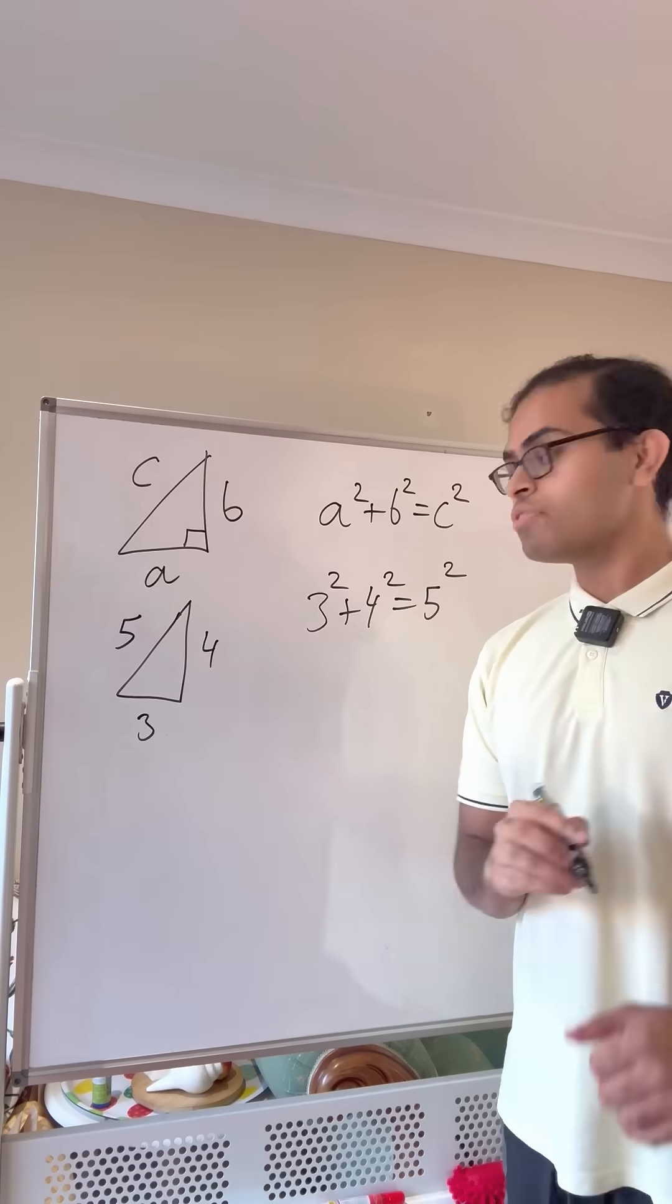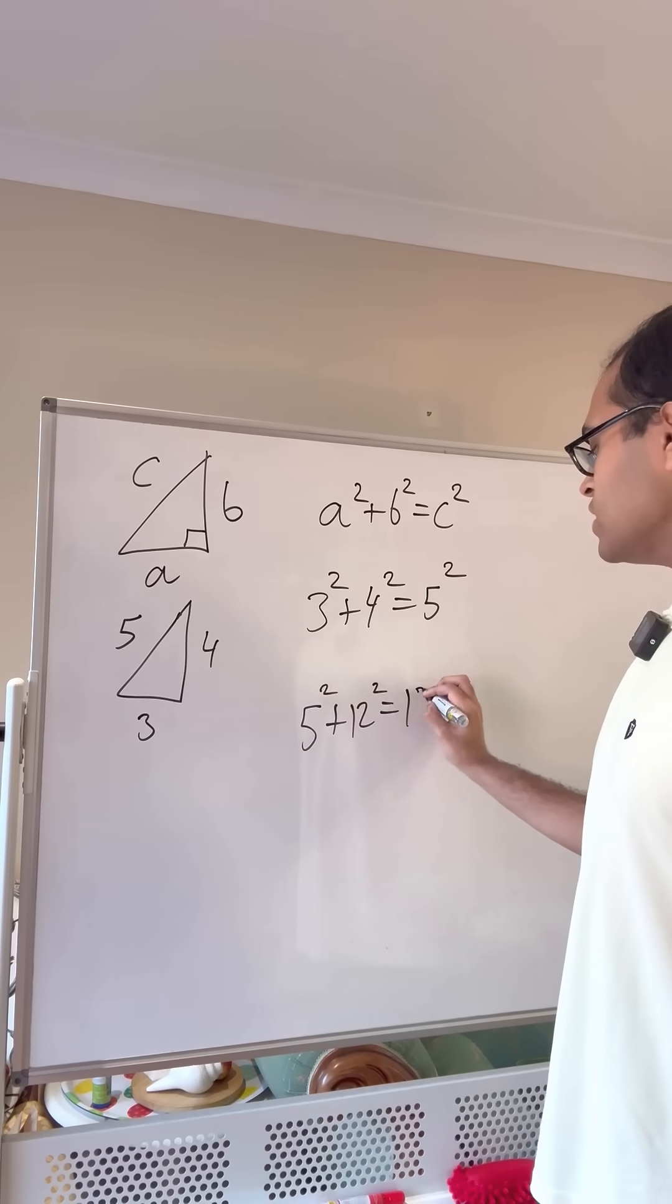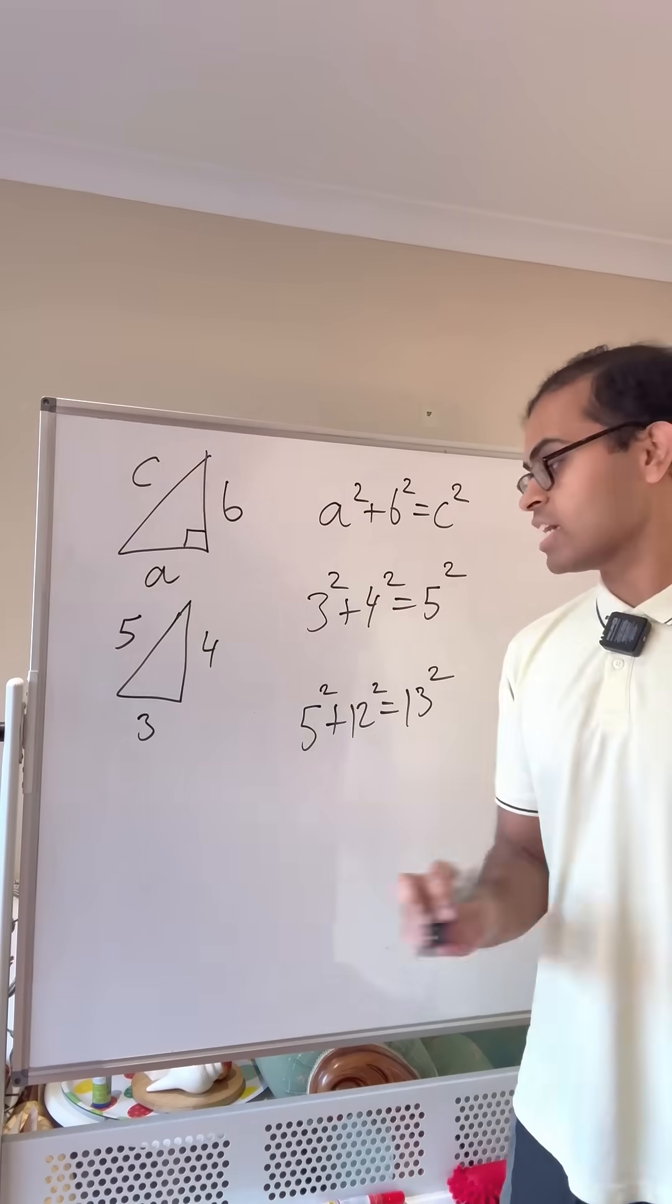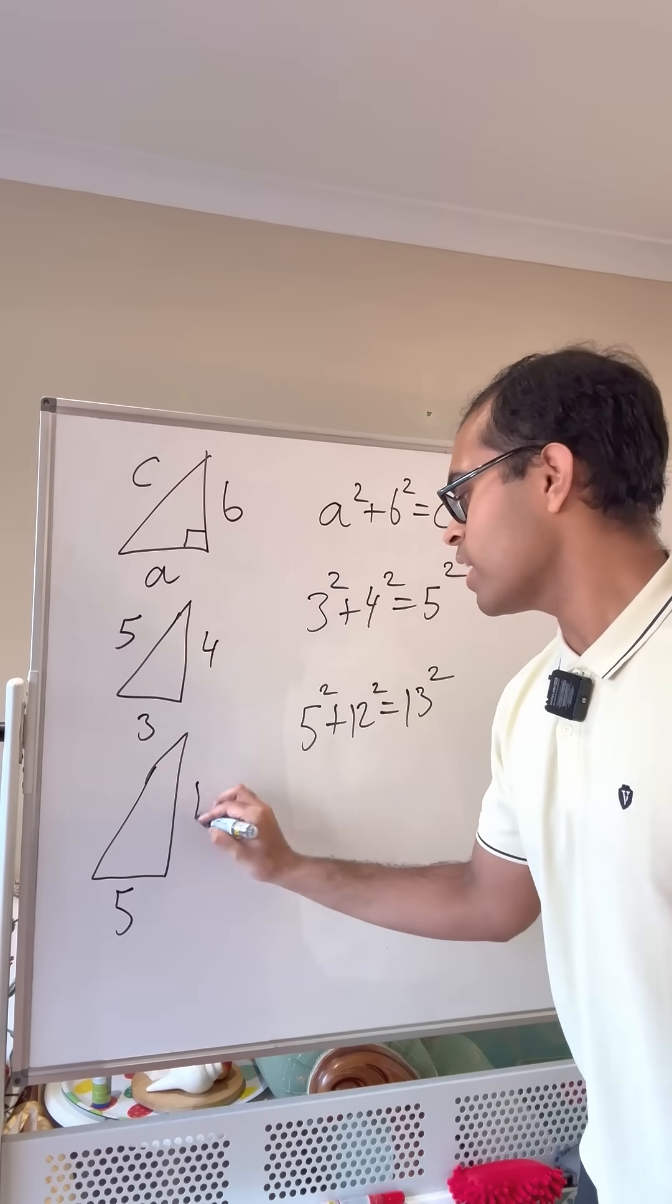But you can do others. For example, you can also do 5 squared plus 12 squared is equal to 13 squared. You can mentally check that too. You've got a right triangle with side lengths 5, 12, and 13.